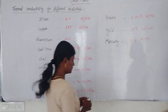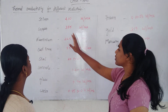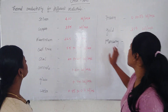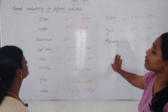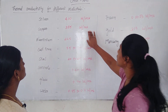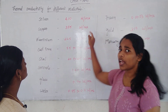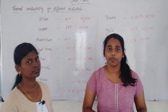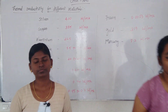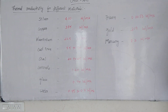So in this video we have learned what the thermal conductivity values are for these materials. The SI unit for thermal conductivity is watt per meter Kelvin. Thank you Kavipriya for explaining this. Thank you for listening — I hope you know more about the video.